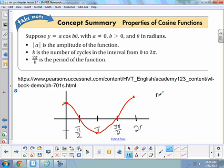So cosine starts with max, 0, min, 0, max.